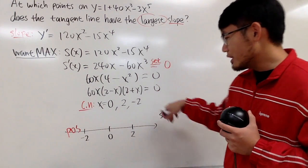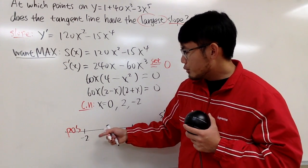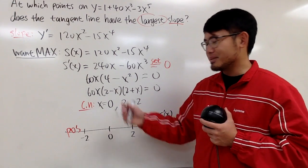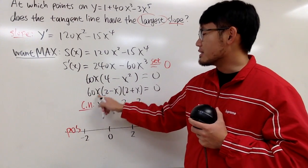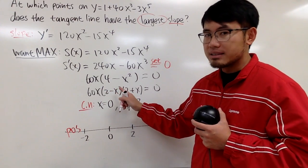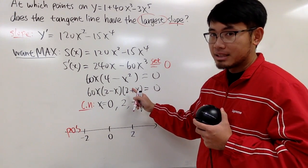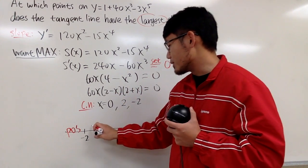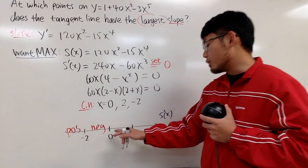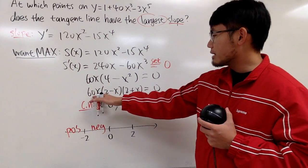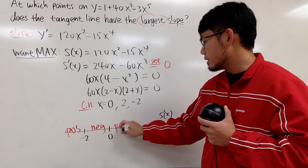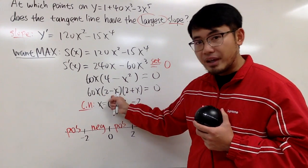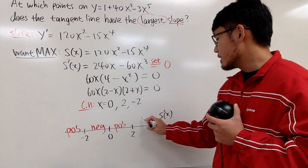Don't be lazy — check every interval. For a number between -2 and 0, try x = -1: 60(-1) is negative, (2 - (-1)) = 3 is positive, (2 + (-1)) = 1 is positive. Negative times positive times positive gives negative. For x between 0 and 2, try x = 1: all three factors are positive, so S' is positive. For x > 2, try x = 25: 60(25) is positive, (2 - 25) is negative, (2 + 25) is positive — so S' is negative.